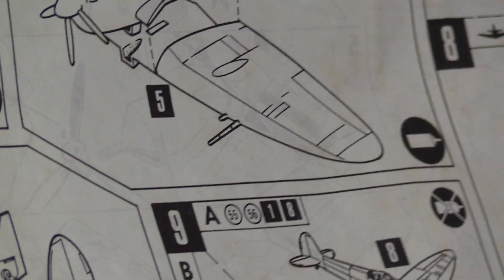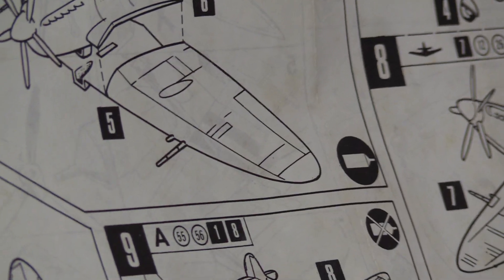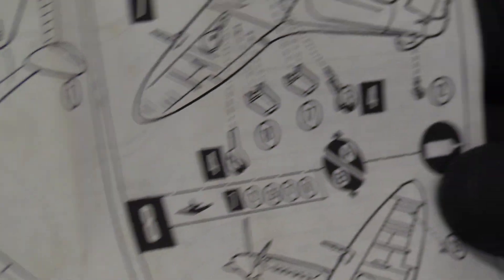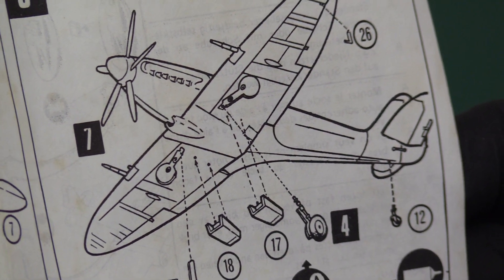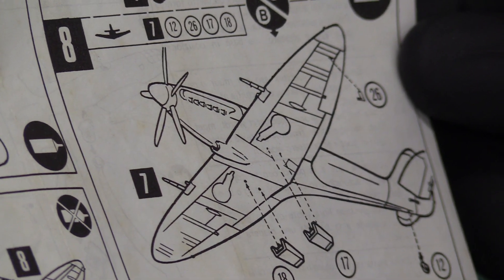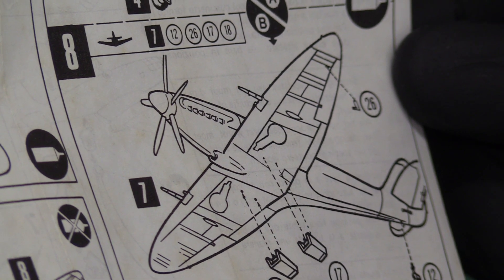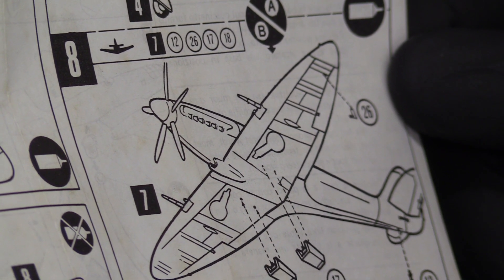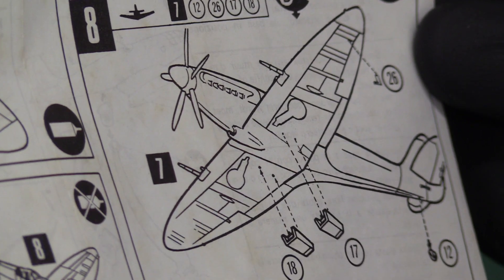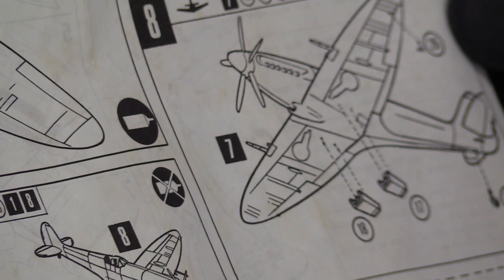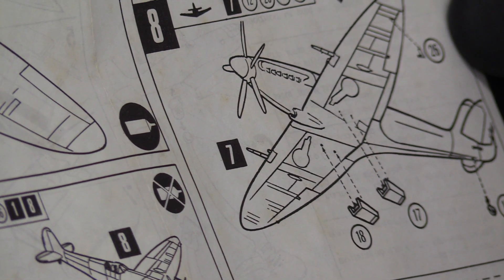Then you've got your Hispano cannon-armed wings going on there. Then you're putting in your radiators and your gear. And then finally you've got the option of having the wheels down or wheels up, the choice is yours. You've got your pitot tube under the wing, tail wheel.